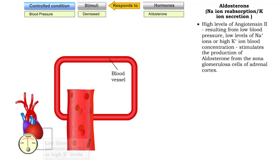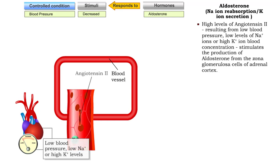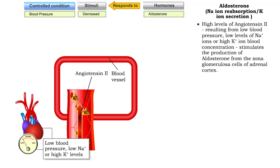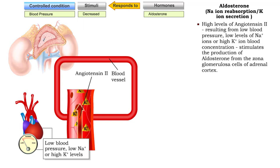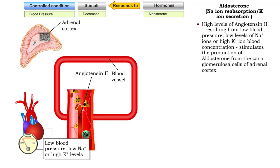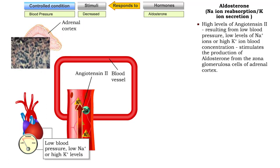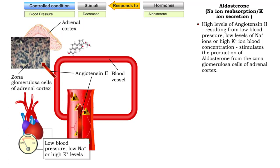High levels of angiotensin II result from low blood pressure, low levels of sodium ions, or high potassium ion blood concentration. These high levels stimulate the production of aldosterone from the zona glomerulosa cells of the adrenal cortex.